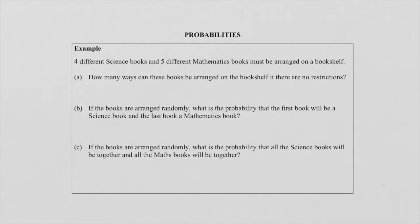In this problem, there are four different science books and five different mathematics books, so a total of nine books — four of them science, five of them mathematics. You may already expect that they're going to ask us to do a grouping. It's very important to notice that when we are dealing with books, clothes, or people, they can't repeat. These books are different so they cannot repeat. We need to arrange these books on a bookshelf.